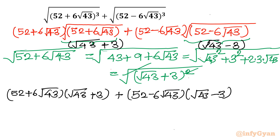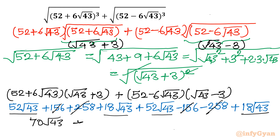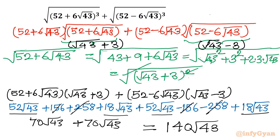Now expanding and collecting our answer: 156 cancels with −156, and 258 cancels with −258. What is left is: 52√43 + 18√43 + 52√43 + 18√43 = (52 + 18 + 52 + 18)√43 = 140√43. Taking √43 as common, our final answer is 140√43.